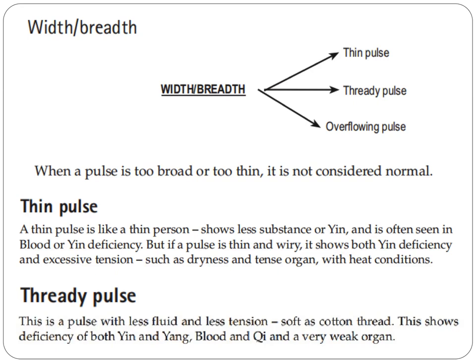The threaded pulse is a pulse with less fluid and less tension — soft as cotton thread. This is how we describe the threaded pulse: cotton thread. This shows deficiency of both yin and yang, blood and qi, and a very weak organ. Remember, a threaded pulse indicates very weak yin and yang, and very deficient qi and blood.